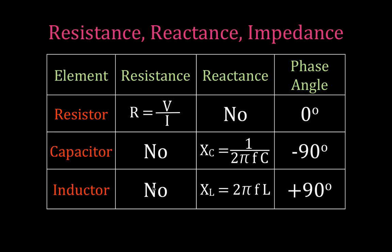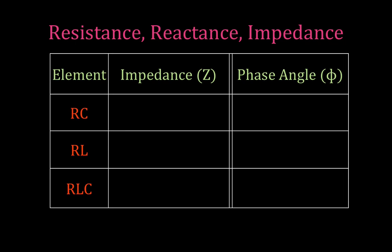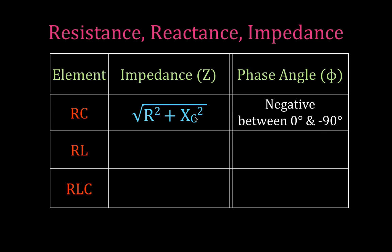For an ideal inductor: it has no resistance but does have reactance, which we calculate as 2π times the frequency of the source times the inductance of the inductor. The angle between the current and the voltage is positive 90 degrees because the voltage leads the current. For an RC circuit, we calculate the impedance as the square root of R² plus XC² — that's the resistance squared plus the capacitive reactance squared. The phase angle between those two will be negative; the voltage will lag the current somewhere between 0 and minus 90 degrees.